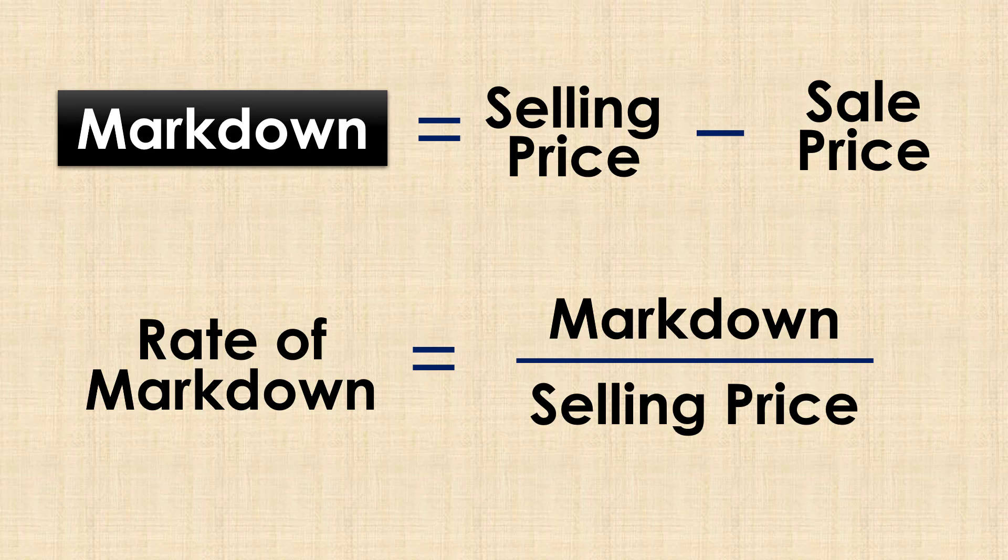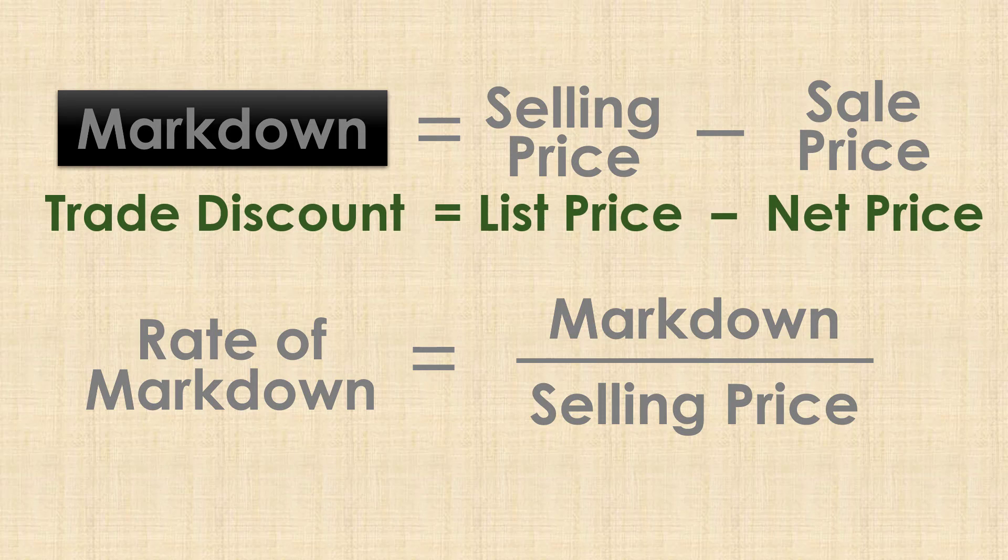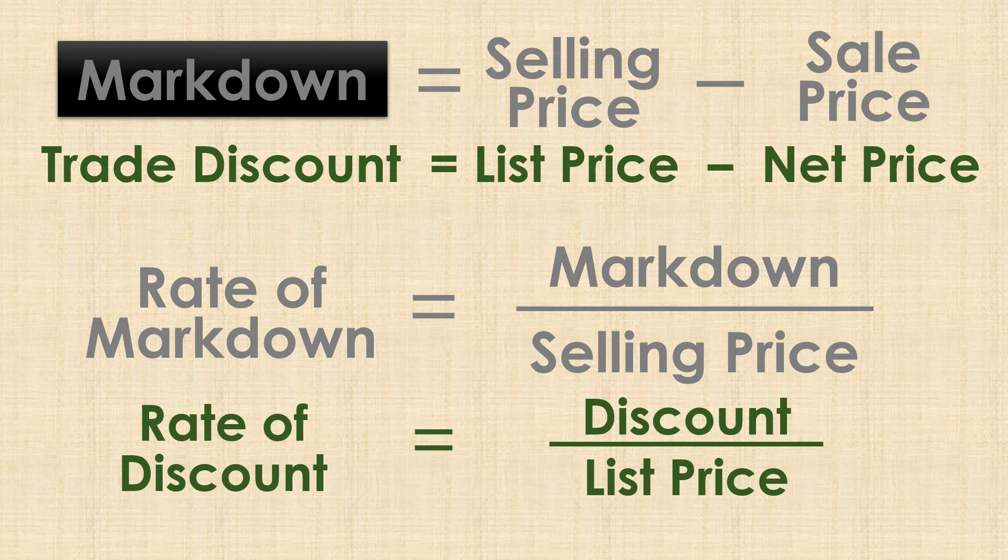In terms of trade discounts, these formulas can be presented as amount of trade discount equals list price minus net price, and the rate of trade discount equals amount of discount divided by list price.